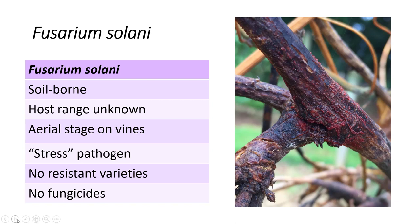Fusarium selenae is a fungus which lives in the soil. It can produce long-lived spores in the soil. We know that it affects passion fruit, but we don't know if the Fusarium selenae which infects passion fruit also can infect and complete its life cycle on other plants. If it can infect other plants, they could be a source of spores which can infect passion fruit.